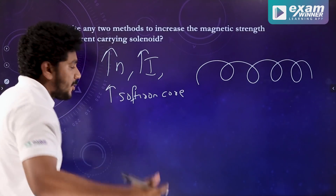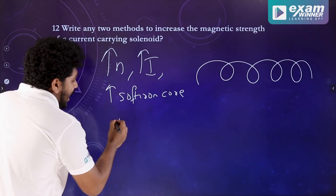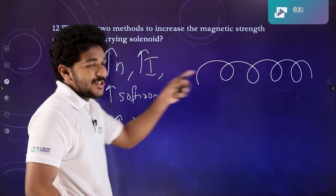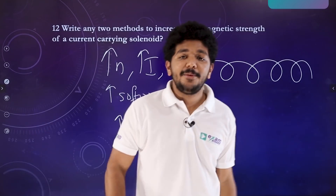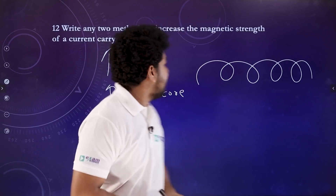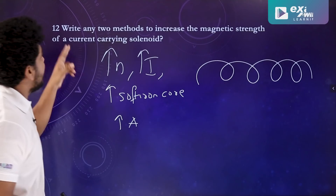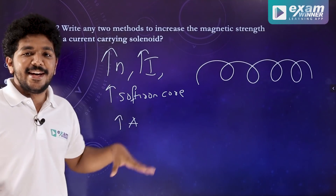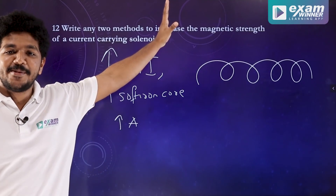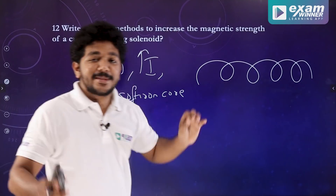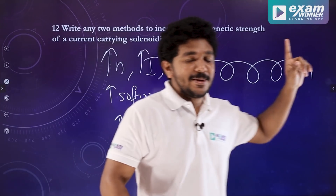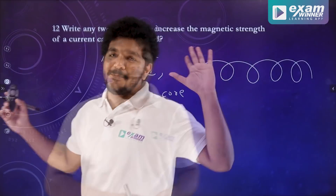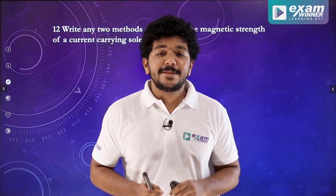If you have another method, increase the area of cross section of solenoid. Here are the two methods. This is a simple question. We can discuss it all. Next time we have the 13th question.